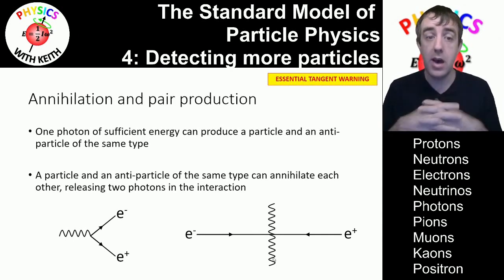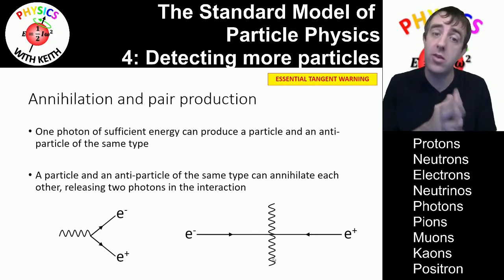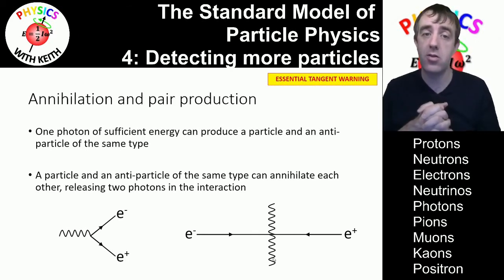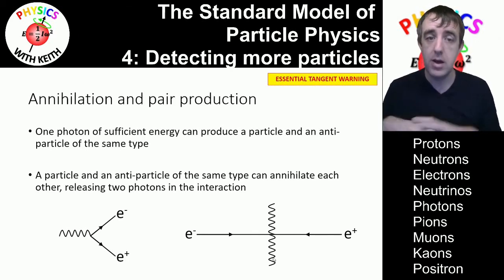Those photons have an energy that's related to the frequency of the electromagnetic radiation through the equation E equals hf. But a single photon is all that's needed to decay into an electron and a positron.